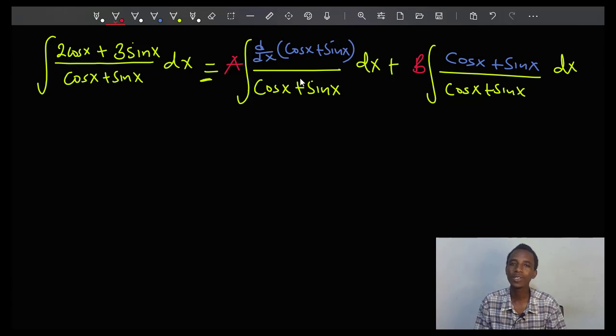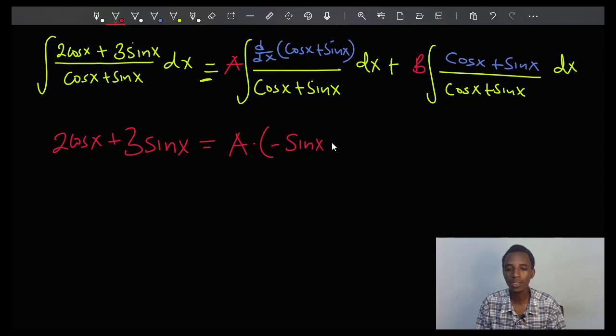So consider this some kind of linear combination of integrals. Of course the denominators are the same, so I'll just take care of the numerators only. 2cos x plus 3sin x equals A times the derivative of this, which is negative sin x plus cos x,